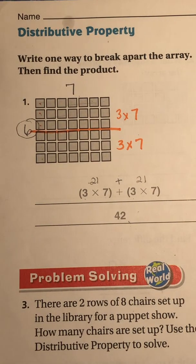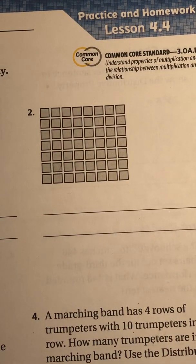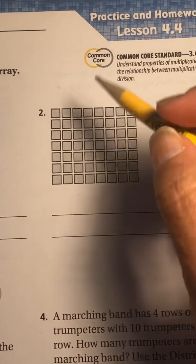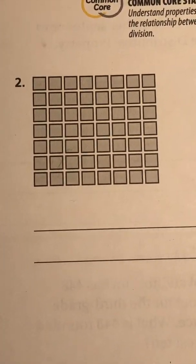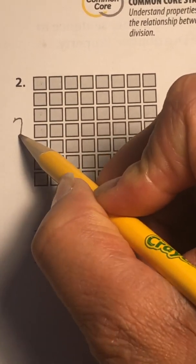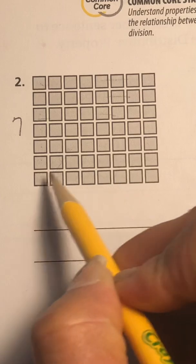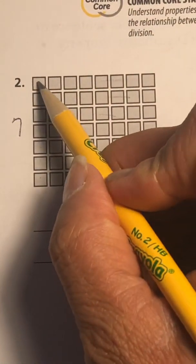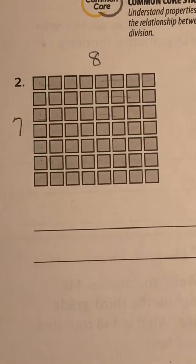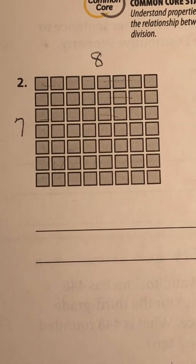I'm also going to do number two. Pick up your pencil. First, let's look at how many are in the array. I'm going to count the rows: one, two, three, four, five, six, seven. I have seven rows. How many are in each row? One, two, three, four, five, six, seven, eight. So this array represents seven rows of eight.